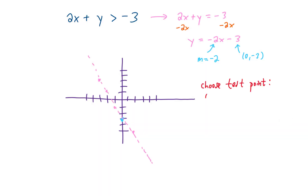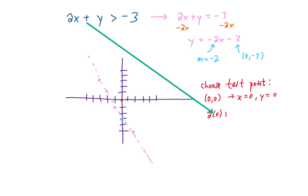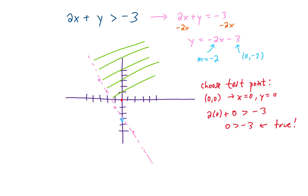To find out if the solution is above or below this line, let's choose the test point (0, 0). Plugging that into the original inequality, we get 2 times 0 plus 0 is greater than negative 3. Simplifying gives us 0 is greater than negative 3, which is actually true. That means our test point is in the solution set, so every point on that side of the line is in the solution set. No matter what point we choose in the solution region, plugging it into this inequality will give us a true statement.